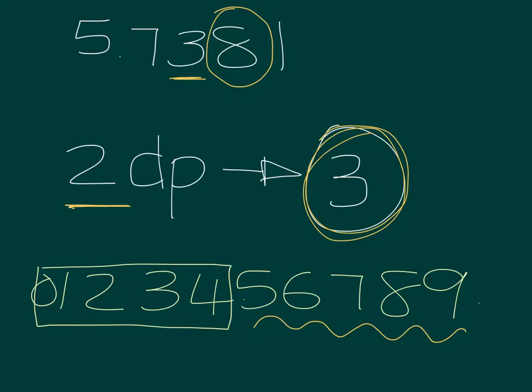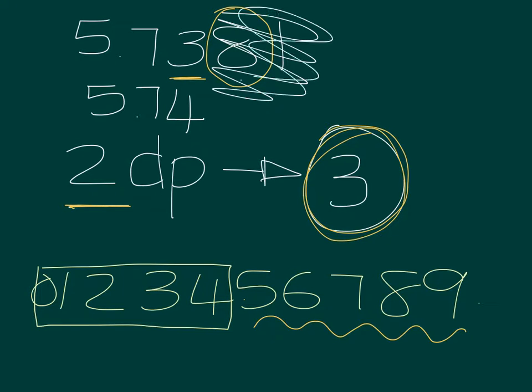So the number goes from 5.73 and it changes to 4. But now, because the 8 gave its power to the number 3 to make it 4, the rest of the numbers die with it. So the answer will give you 5.74.